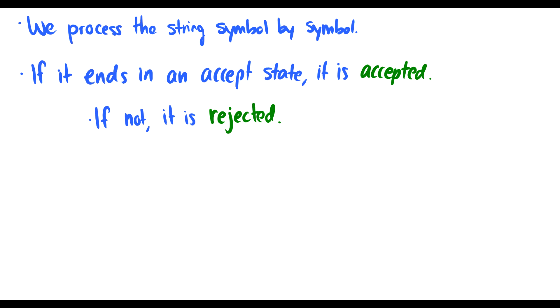When we have a string, we process it symbol by symbol. If it ends in an accept state, it's accepted. If not, it's rejected.